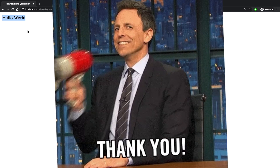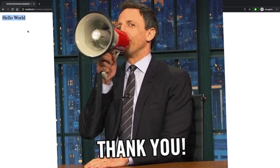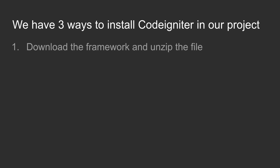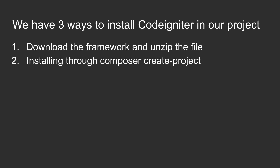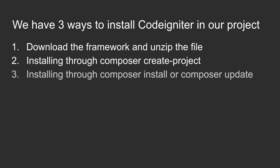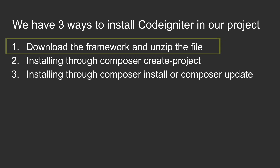Now let's go and install CodeIgniter. We have three different ways to install CodeIgniter 4 in our project. In this tutorial we are choosing the simplest way, which is downloading the framework zip file and copying the files to our empty project — or as I call it, the old fashioned copy-paste installation.